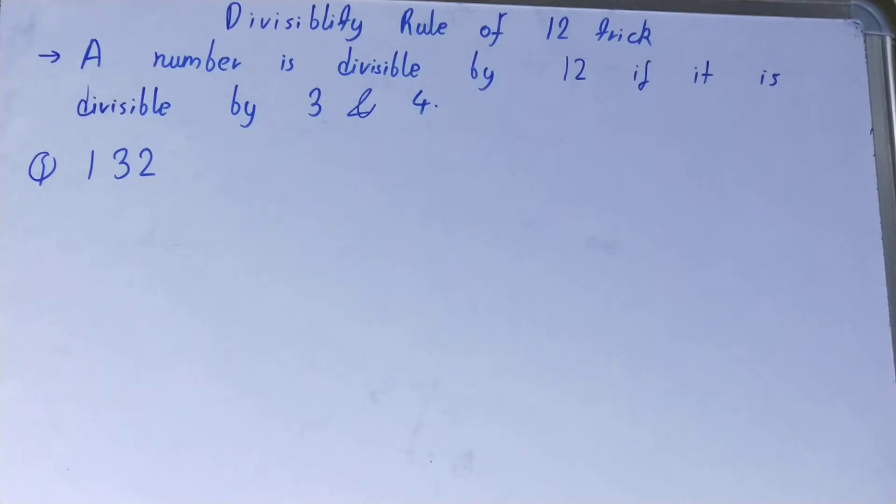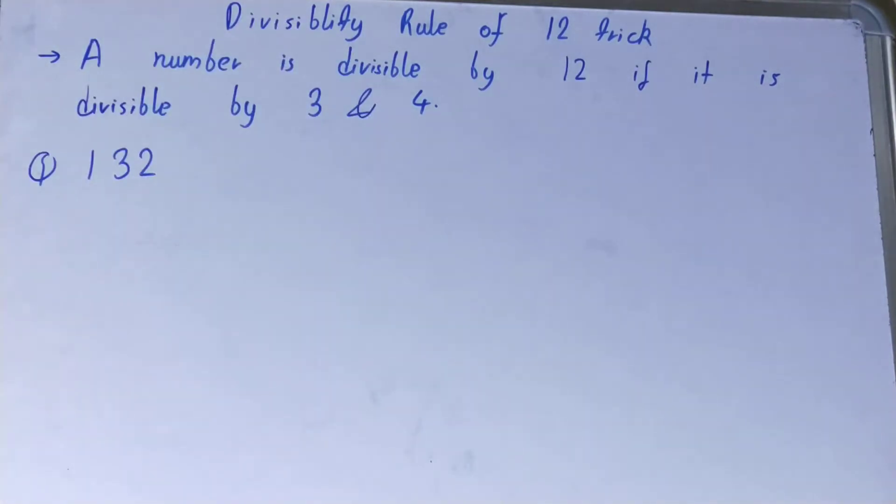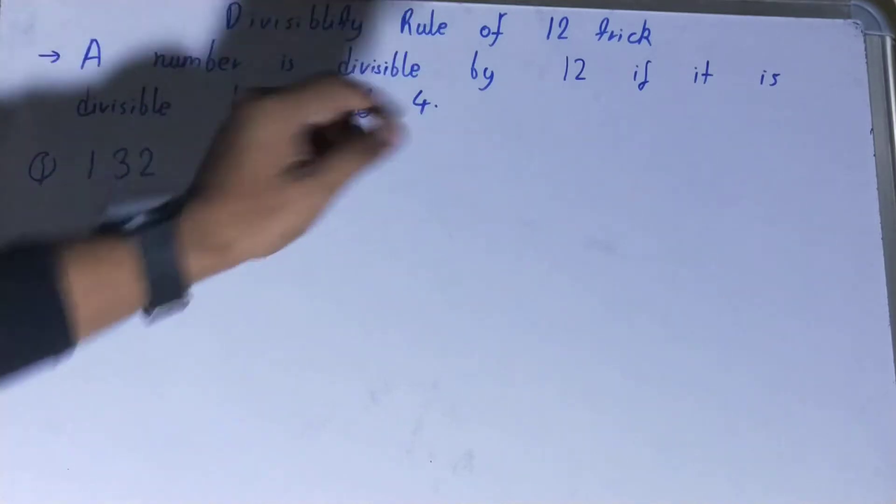A number is divisible by 12 if it is divisible by 3 as well as 4. So how can we check whether a particular number is divisible by 3 and 4? We will not use the traditional approach. We will use the divisibility rule of 3 and 4 for that.